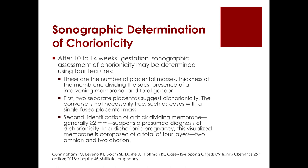After 10 to 14 weeks AOG, sonographic assessment of chorionicity may be determined using four features: the number of placental masses, the thickness of the membrane dividing the sacs, presence of an intervening membrane, and fetal gender. Two separate placentas suggest dichorionicity, though the converse is not necessarily true in cases with a single fused placental mass. Identification of a thick dividing membrane, generally more than two millimeters, supports a presumed diagnosis of dichorionicity.